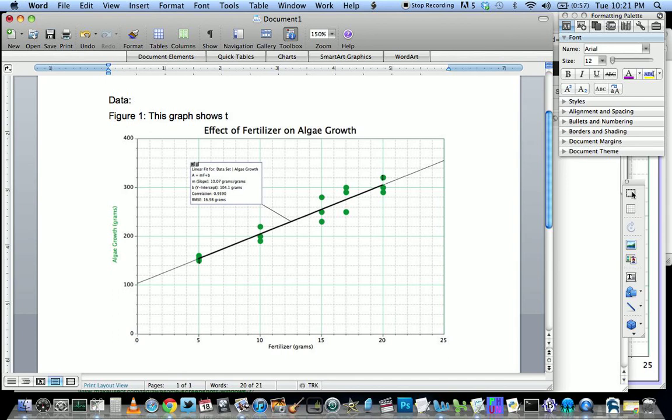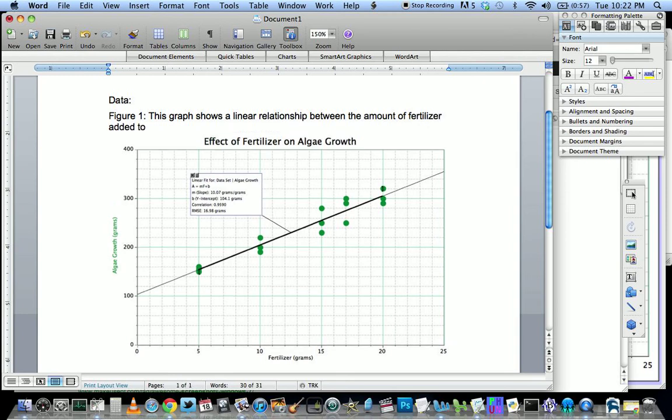For example, this graph shows a linear relationship between the amount of fertilizer added to a sample of pond water and the amount of algae that grows. The point of this short description is to give your readers something to clarify what this actually is.